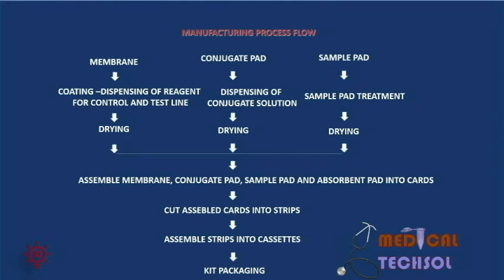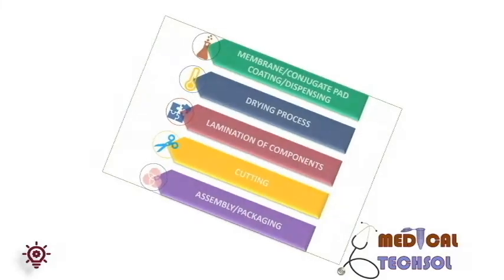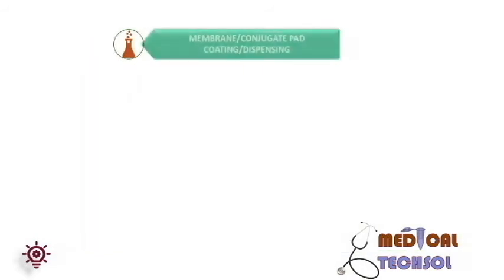The manufacturing flowchart proceeds as follows: the first step involves coating, dispensing, and treatment of the membrane, conjugate pad, and sample pad. The second step is drying of these components. The third step is assembling or lamination, and the fourth step is cutting into strips. The fifth step is cassette assembling, and the last step is kit packaging. The instruments used in this process will be explained in the next section.